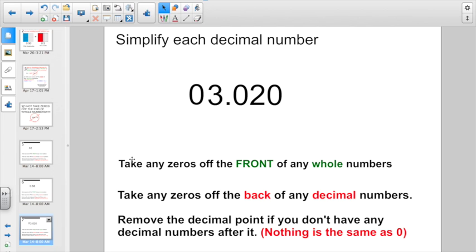Let's try it again. Take off any zeros off the front of any whole numbers. Here I have the whole number 3, so I don't need to start it with a zero. And take any zeros off the back of any decimal numbers. Instead of 3 and 20 thousandths, I can simplify it down to 3 and 2 hundredths.